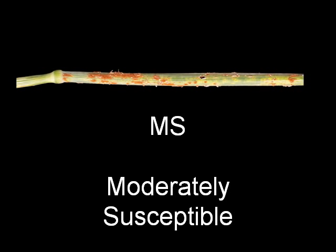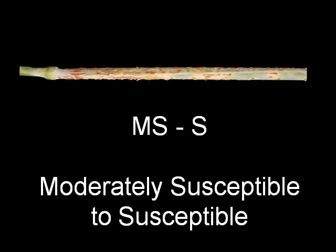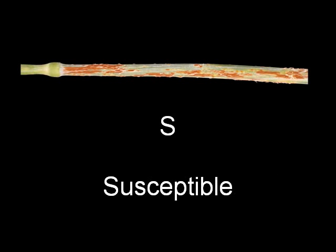Moving to the next one is moderately susceptible — you see they're getting bigger, about the same numbers but gradually getting bigger. Then moderately susceptible to susceptible with larger and some smaller pustules, and then we go to the extreme level which we call susceptible.